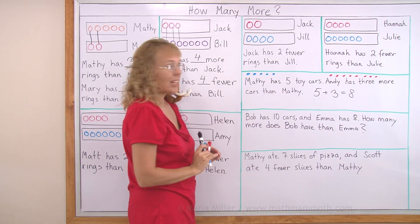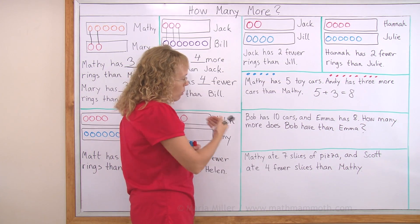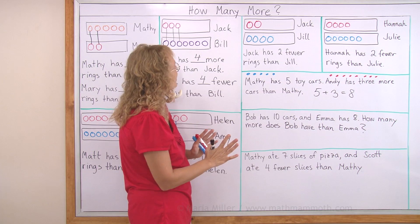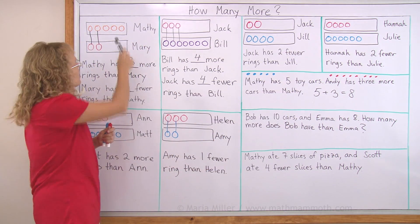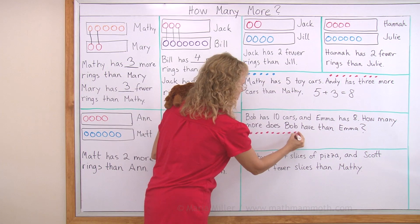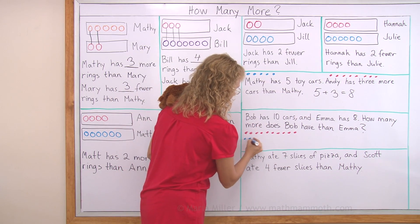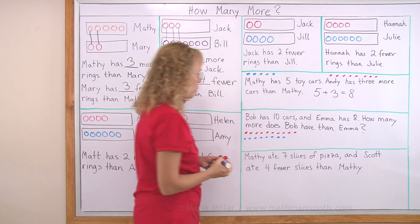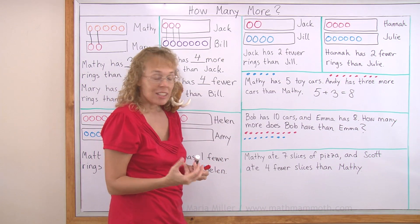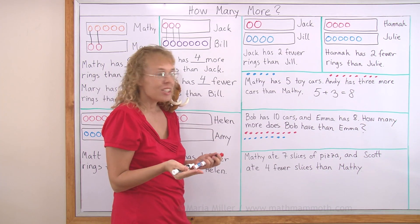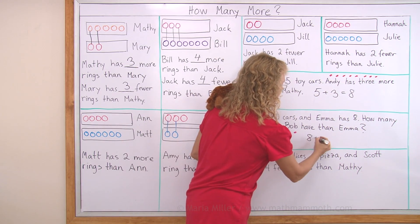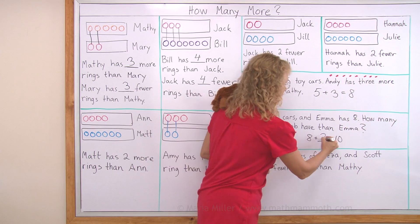Bob has ten cars and Emma has eight cars. How many more does Bob have than Emma? If I draw Bob's and Emma's cars, maybe it is clear. Bob's would be these ten, and Emma has eight. Now we can see how many more Bob has than Emma — it's two cars. You can solve this if you don't want to draw. You can solve this by subtraction or by addition — you can think: eight plus how many more makes ten? The answer would be two more.